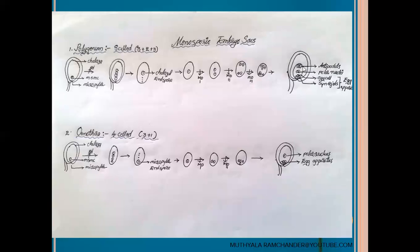The matured polygonum embryosac contains eight cells arranged in a three plus two plus three arrangement. Three cells belong to the egg apparatus, three cells belong to the antipodals, and two cells belong to the secondary nucleus. Since the complete embryosac of polygonum is developed from only a single megaspore, it is called a monosporic type of embryosac.